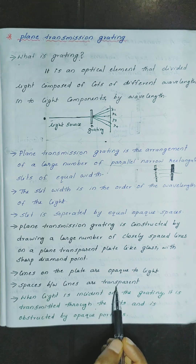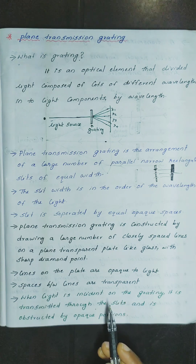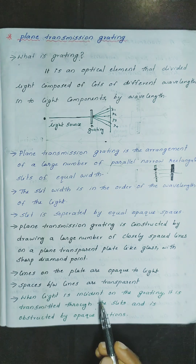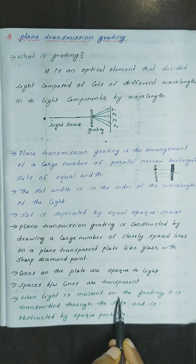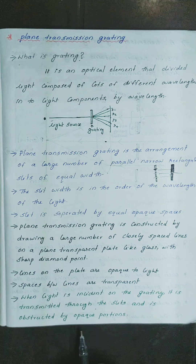Spaces between lines are transparent, but the opaque lines have no space. The lines are closely spaced and opaque to light. When light is incident on the grating, it is transmitted through the slits and is obstructed by the opaque portions.